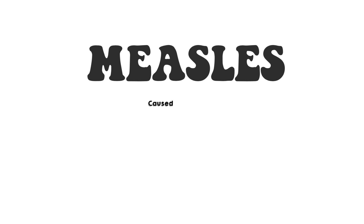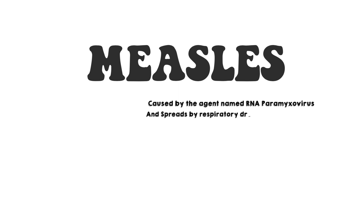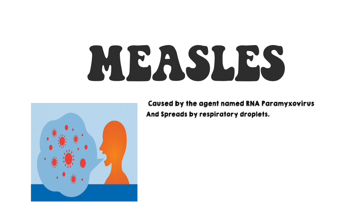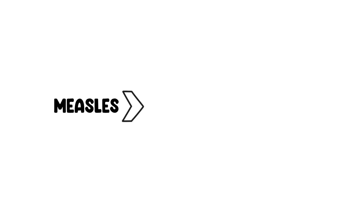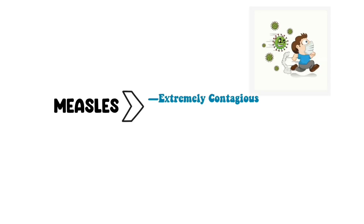The first viral disease we are going to learn is measles. Measles is caused by the agent named RNA paramyxovirus, and it is spread by respiratory droplets. Measles is one of the most contagious infectious diseases.